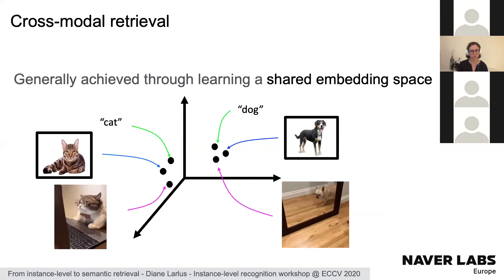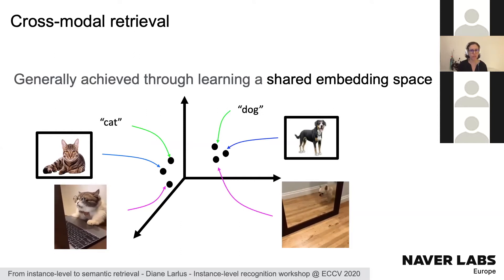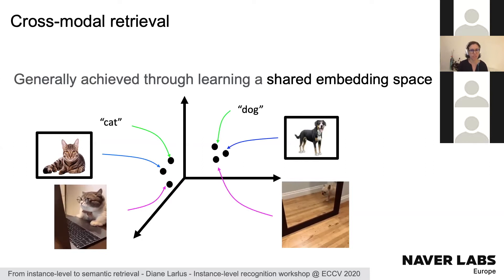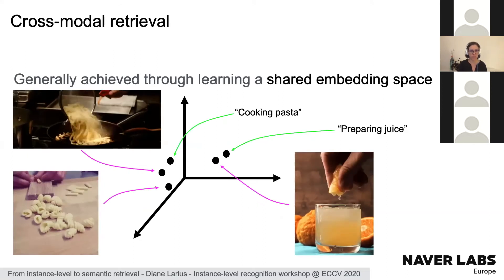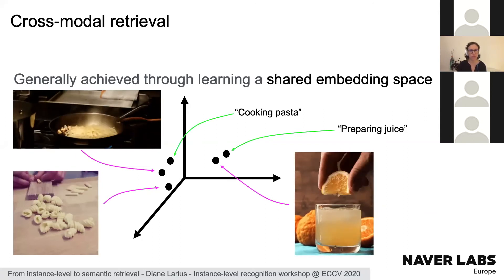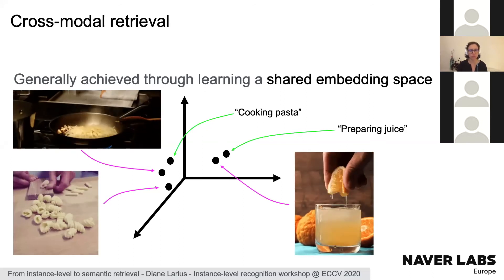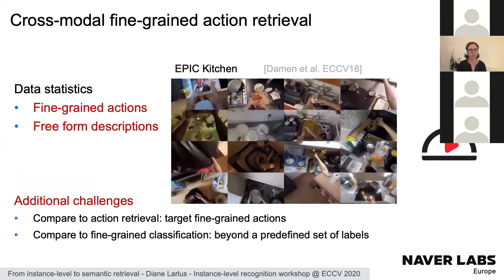In general, this is solved by building a shared embedding space: we have three different embedding functions — a green one for text, a blue one for still images, and a pink one for videos — ensuring that everything related to a cat is close together in that space and far from everything related to dogs. We can generalize beyond object categories to complex actions, like cooking pasta being close together and far from preparing juice. This work was motivated by the Epic Kitchens dataset for fine-grained cross-modal action retrieval.